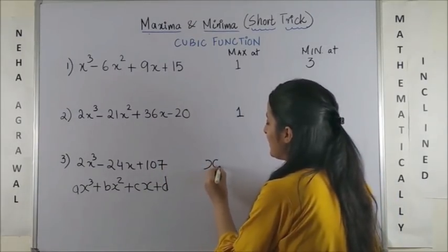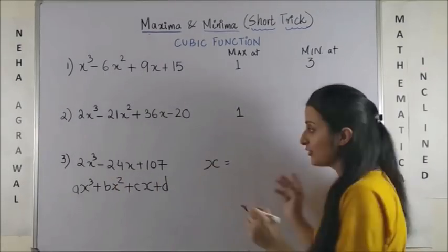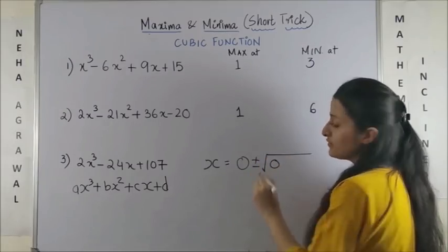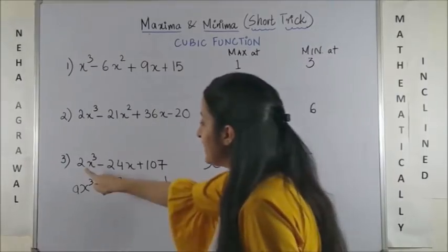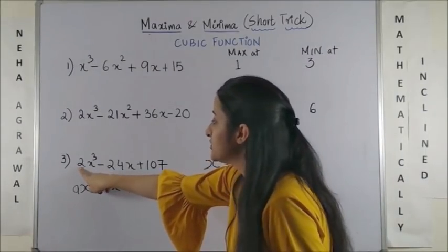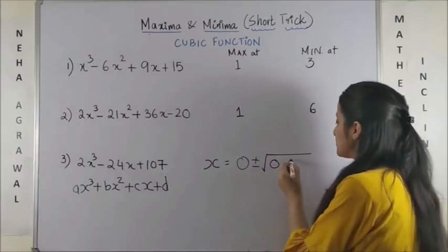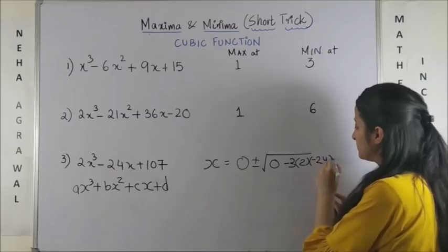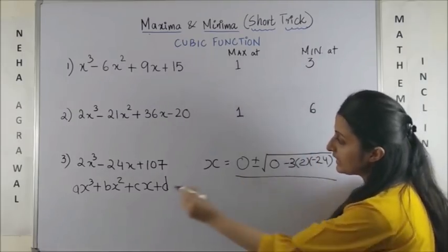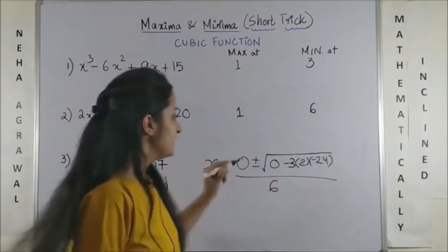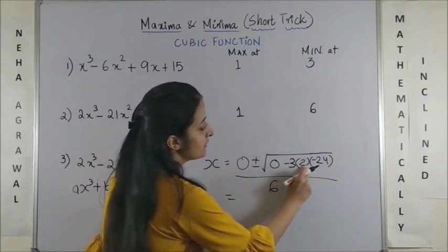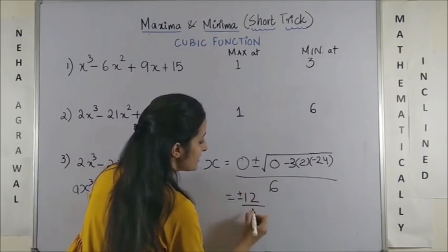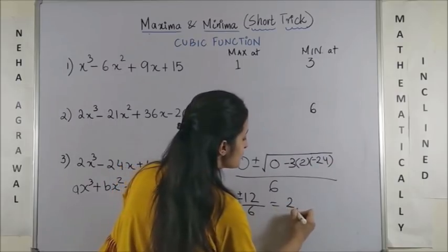So, here if I calculate my x that will be minus b which is technically not present. So, it's just a 0 plus minus b square which is a 0 minus 3ac. So, 3 into 2 which is 6 into minus 24. So, 3a into minus 24 upon 3a which would be 6. Now, this would give you 3 into 6 into 24 that makes it 144 so 12.